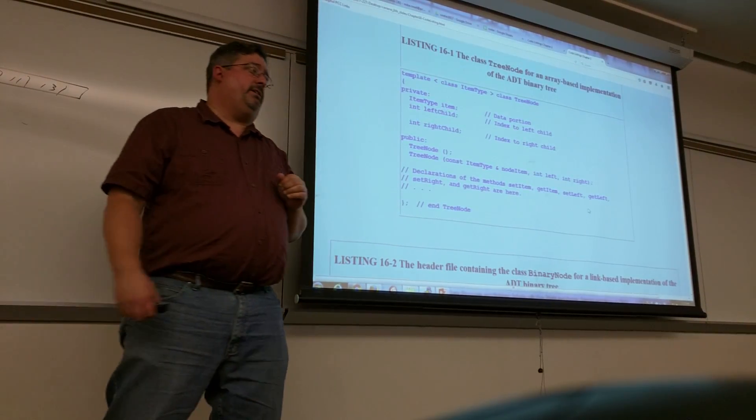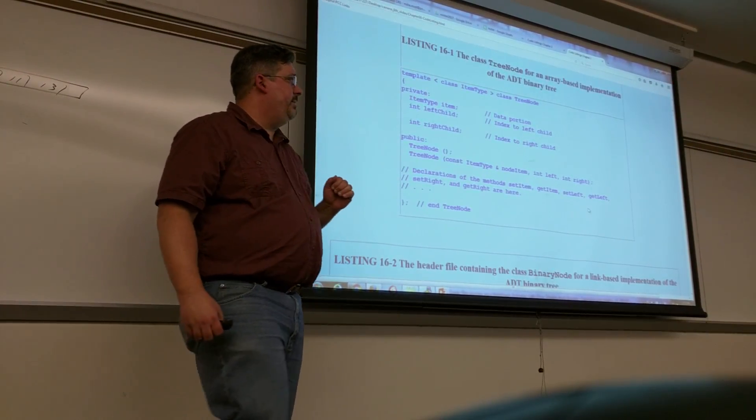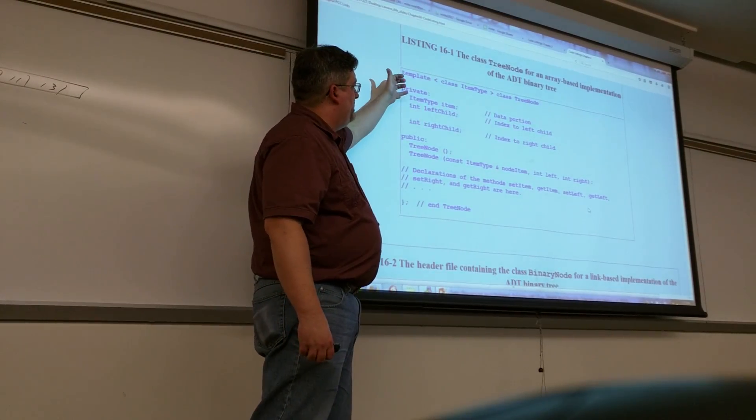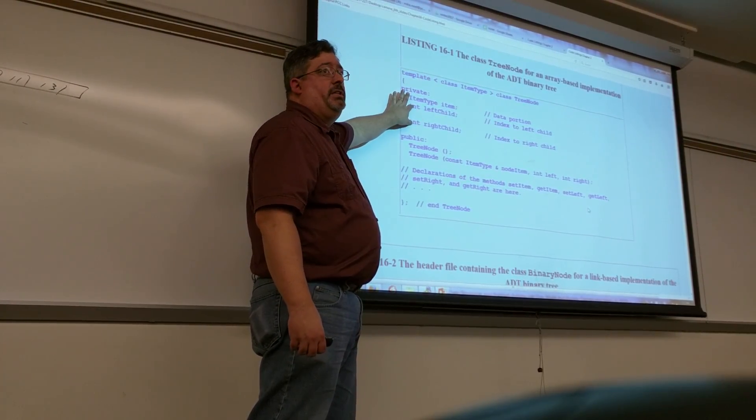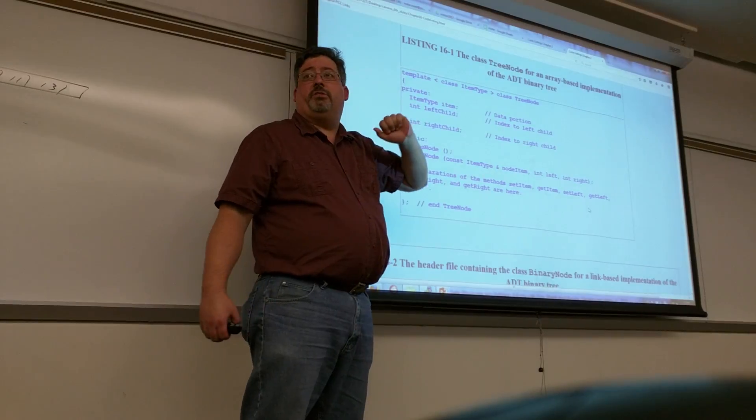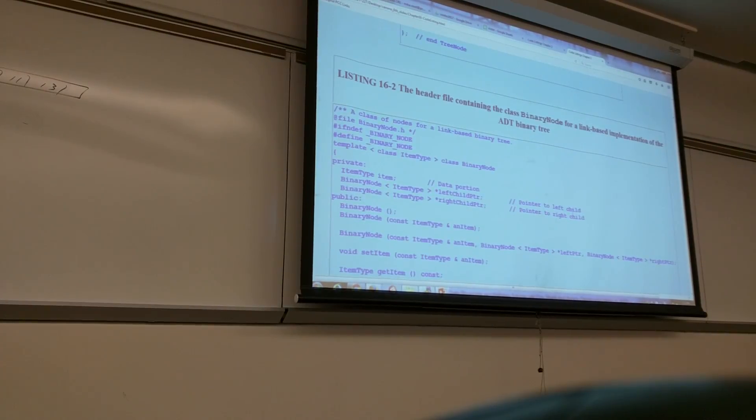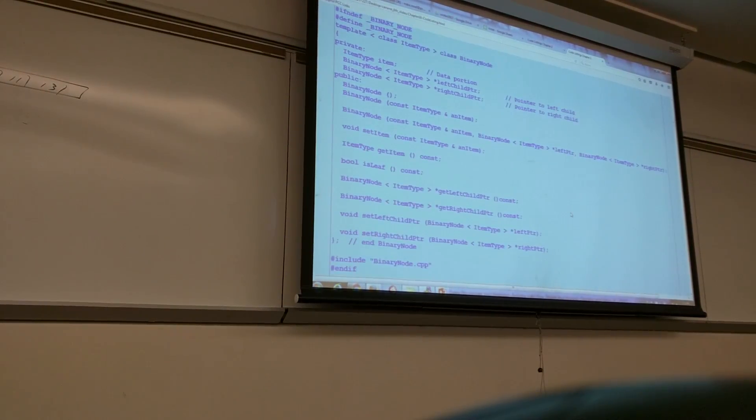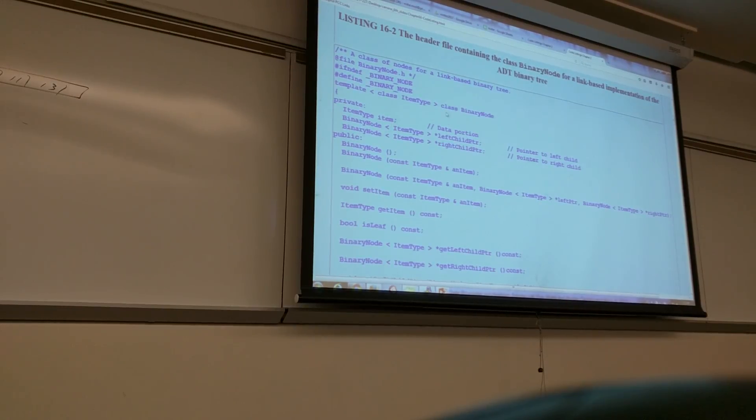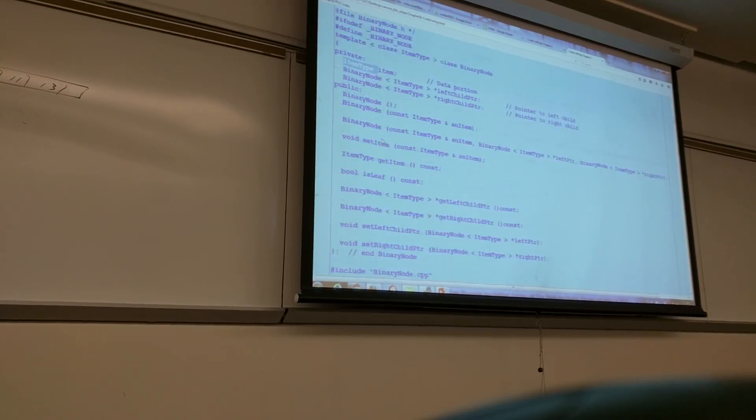In a link-based implementation, I don't know if I have a slide for this one, but in a link-based implementation, these would be integers. These would be pointers to tree nodes. Okay, yeah, there we go. So the next one down here is, I have a binary node, and it's my item type again, and then it is a left child pointer, right child pointer, and my left and right child. So the same thing, okay?